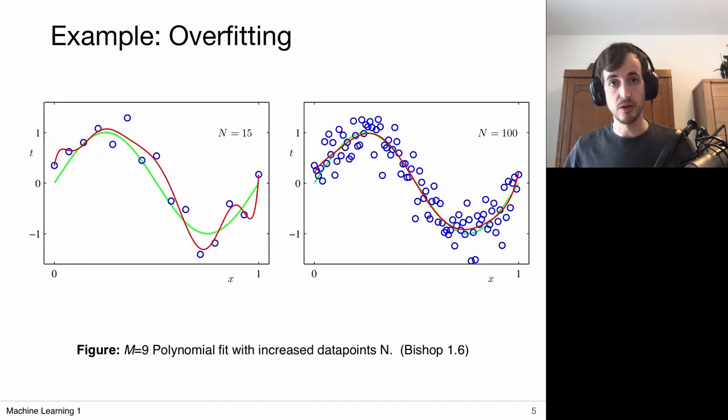Now one solution to overfitting, and there's actually many solutions to overfitting, but one solution, very straightforward solution, is to just gather more data. And this is of course easily said. In practice it's maybe sometimes hard to collect your data. But in general, in machine learning, you really want as much data as possible.